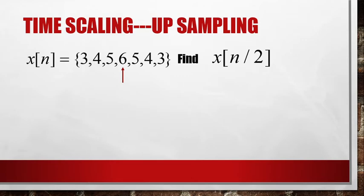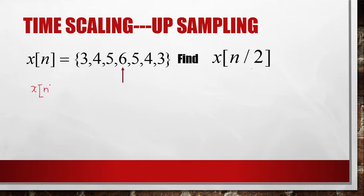Next is a very important topic called time scaling. Under time scaling, two types can be done. Scaling means we are going to scale the time sequence. So n is given and we want to get n/2. I am writing this signal first in tabular form. I am giving you the thumb rule for how to do this, and then you will understand why this is called upsampling.